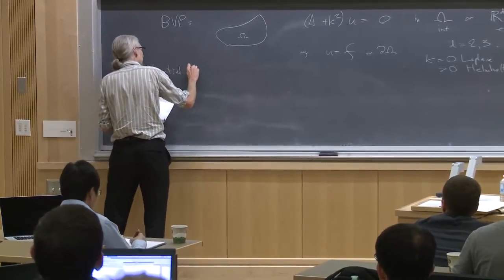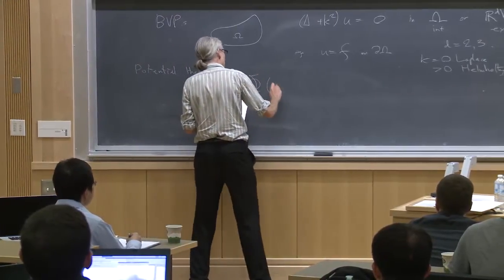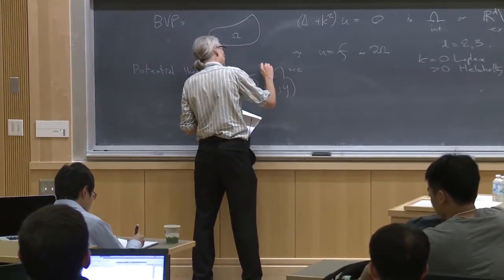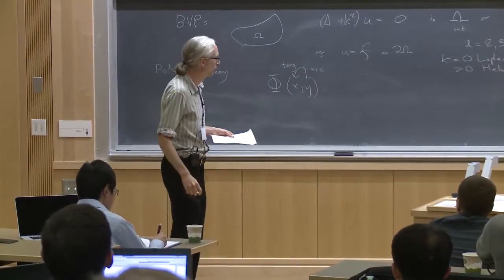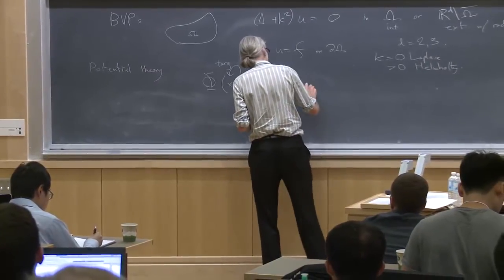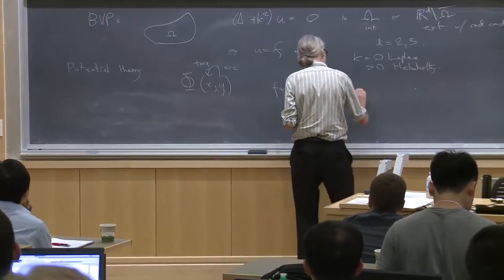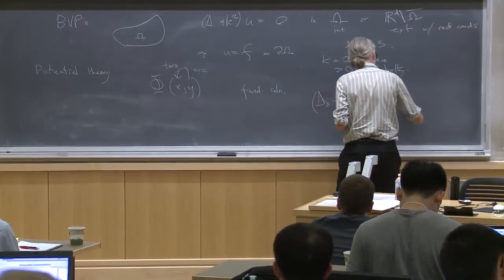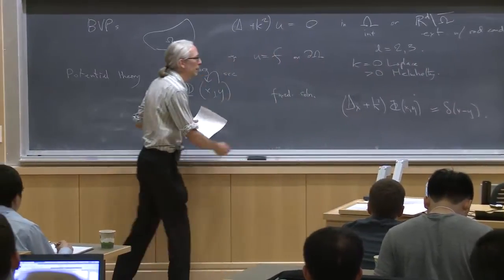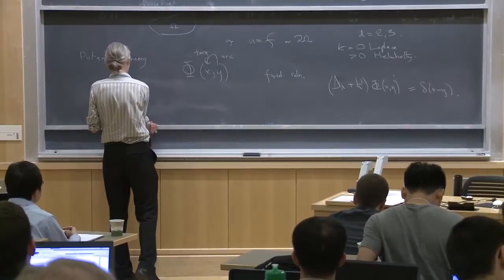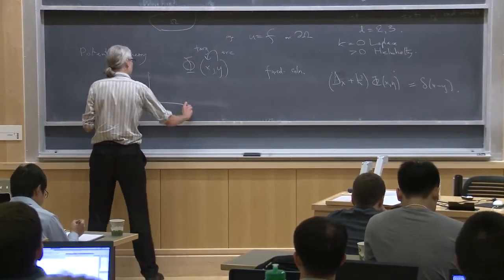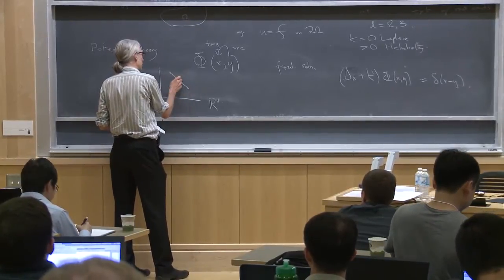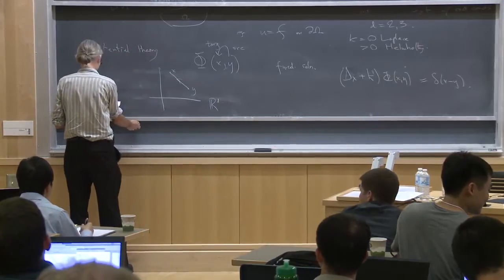Potential theory recap: there's a fundamental solution. There's a source point y and a target point x — it always goes from y to x. The fundamental solution obeys: if you hit it with the differential operator, it gives a delta function, with some radiation condition. One classic confusion is that x and y are not Cartesian coordinates — they're both points in two or three-dimensional space.